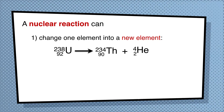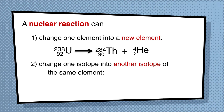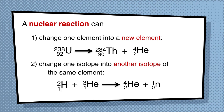Uranium-238 breaks down into thorium-234 plus a helium nucleus, or alpha particle. Another thing that can happen is we could change one isotope into another isotope of the same element. For example, hydrogen reacting with helium-3 to produce helium-4, and a neutron is given off.